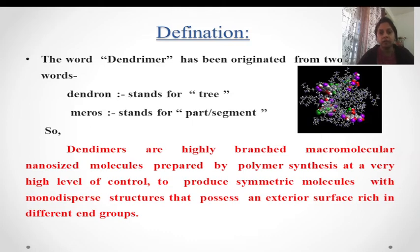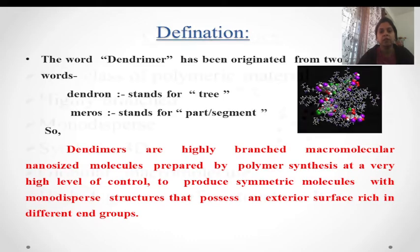Dendrimers are highly branched macromolecular nano-sized molecules prepared by polymer synthesis at a very high level of control. They have a core, interior part, and exterior part which can be seen in the diagrams present here.